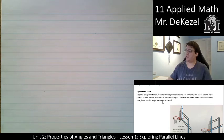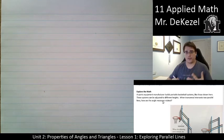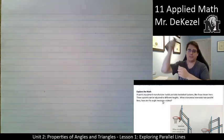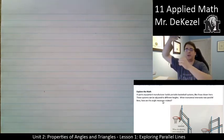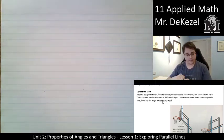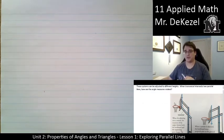The first question: a sports equipment manufacturer builds portable basketball systems like those shown here. These systems can be adjusted to different heights — you're probably familiar with these. You can raise and lower the height of the backboard, maybe with a turning mechanism, or it's a bar that you unhook and move into different slots. So when a transversal intersects two parallel lines, how are the angle measures related? We're given an example here with the basketball hoops.